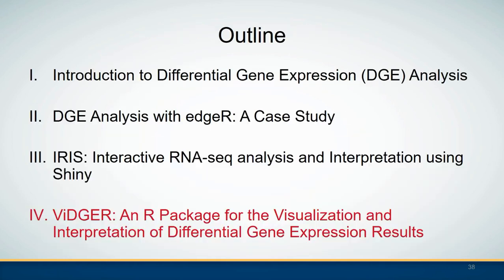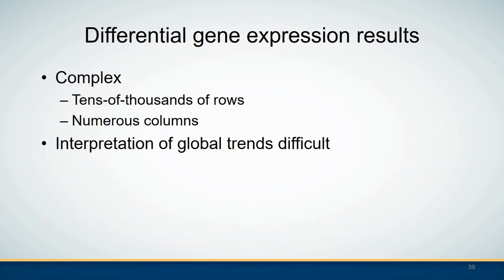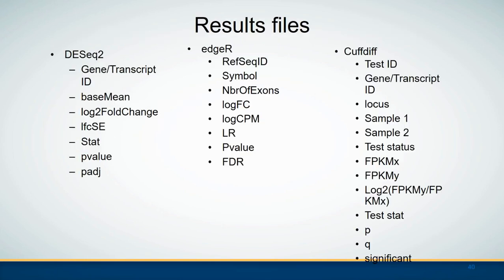Finally I want to show you an R package developed for the visualization and interpretation of differential gene expression results from popular DGE tools. Interpretation of DGE results is very challenging because there are tens of thousands of rows and numerous columns in the output from those DGE tools, which makes interpreting global trends difficult. Here are listed the information included in the output from DESeq2, edgeR, and Cuffdiff — log fold change, test statistics, p-values, and adjusted p-values.